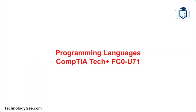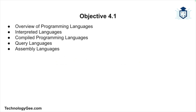What's up everybody, this is Tech G back with another video to help you successfully pass the CompTIA Tech Plus certification exam. In this video, you're going to learn about the different types of programming languages and how they function, and we'll compare and contrast the three main categories: interpreted languages, compiled programming languages, and query languages, including assembly languages. Let's break these down into their key types and functions.